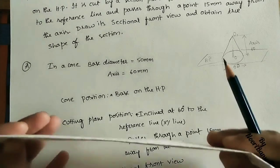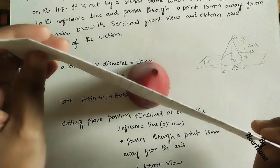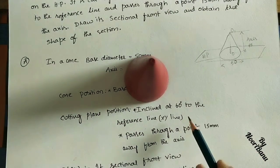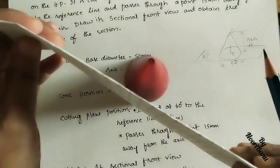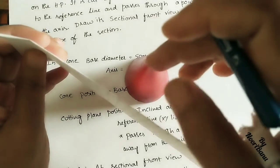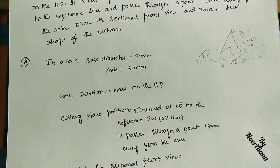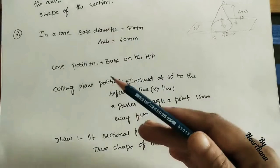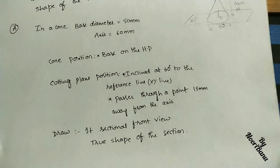We are taking the solid and cutting the cone with this cutting plane. The cutting plane is tilted at an angle of 60 degrees to the reference line. One more condition: this cutting plane is 15 mm away from the axis. So the distance between the axis and the cutting plane is 15 mm.